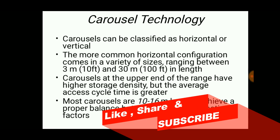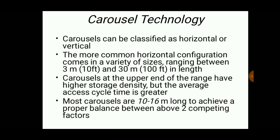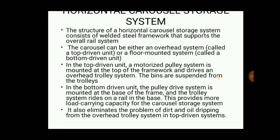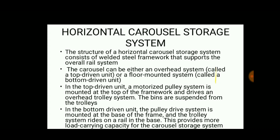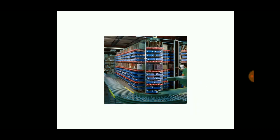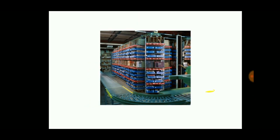Carousels can be classified into horizontal and vertical types. The more common horizontal configuration has sizes from 3 meters to 30 meters in length. Carousels at the upper end of the range have high storage density, but the average access cycle time is greater. This is the horizontal carousel storage system as seen in the picture.